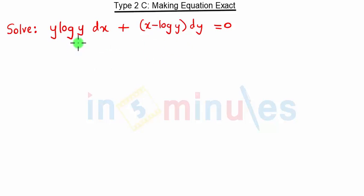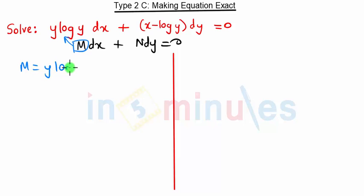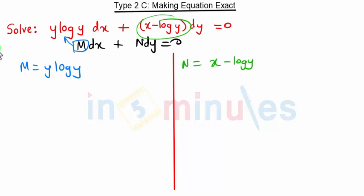This equation is of the form M dx plus N dy equals 0. Comparing the two equations, we get M as y·log(y) and N as x minus log(y). After this, we will find the partial derivative of M with respect to y and the partial derivative of N with respect to x.